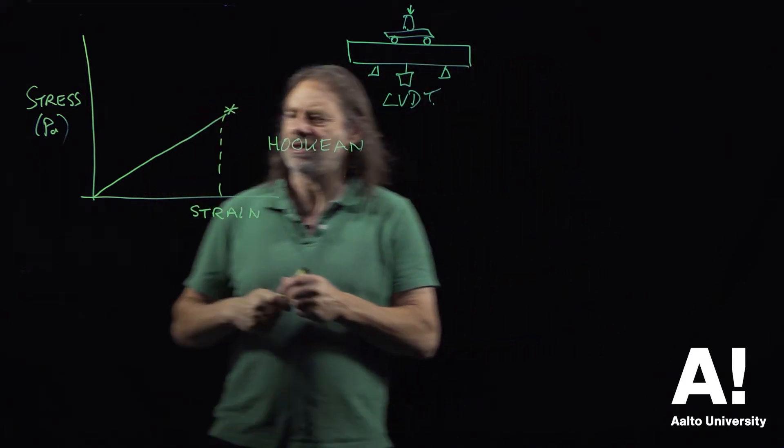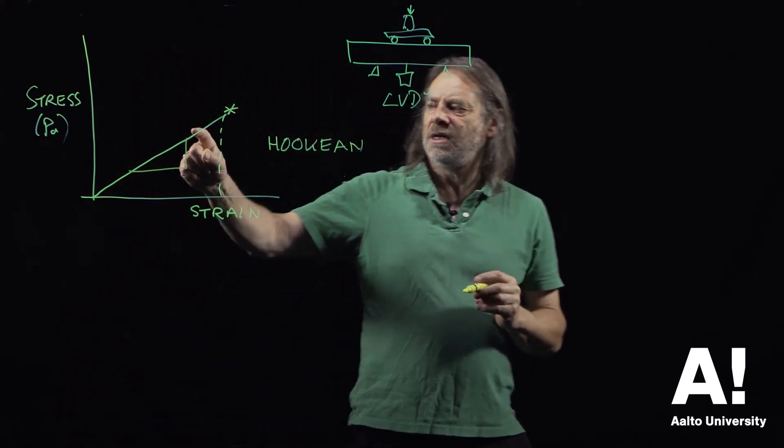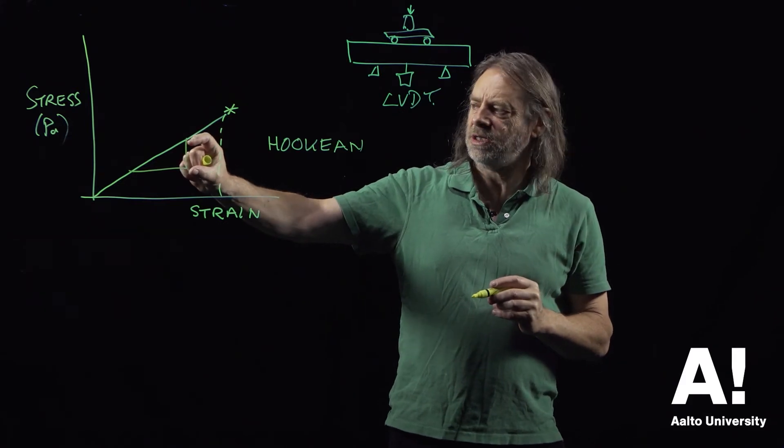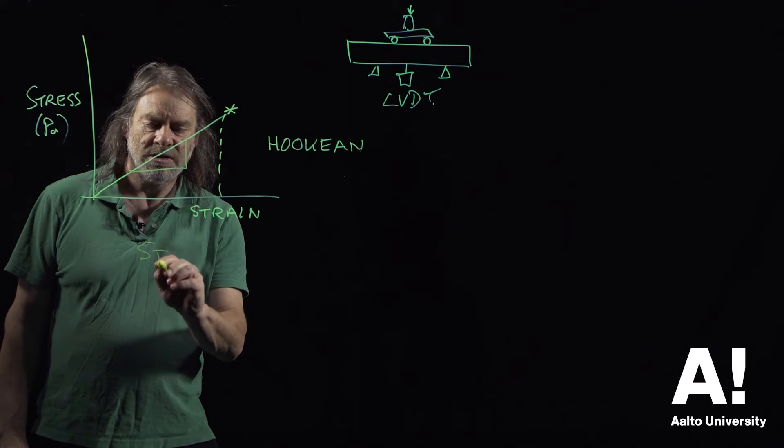We get that stiffness by dividing the applied load, the stress, by the strain. So stress divided by strain gives you the stiffness of that material.